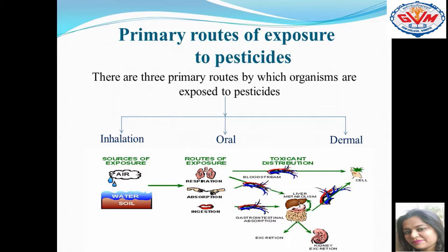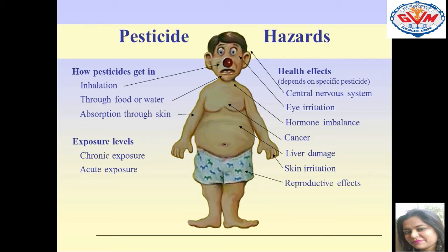This slide shows how our body gets infected with pesticides — through inhalation, through food or water, and through absorption through the skin. There are two kinds of exposure: chronic exposure, which involves long-term exposure with long-term symptoms, and acute exposure, which involves short-term duration where symptoms appear even within a short period. For health hazards, the affected body parts include the central nervous system, eye irritation, liver damage, skin irritation, reproductive effects, and most significantly, cancer.